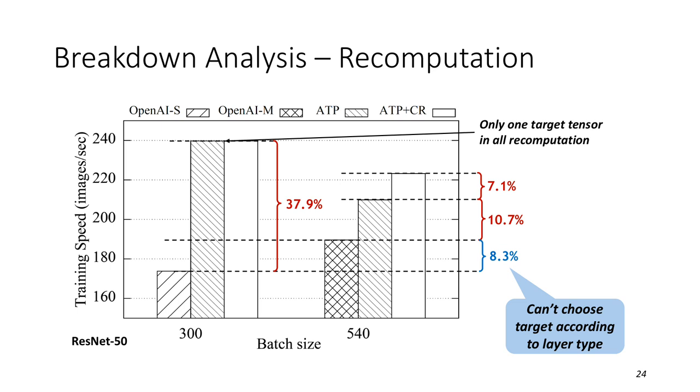This figure shows the breakdown analysis of recomputation. At the batch size of 300, the training speed remains the same when enabling ATP alone and enabling both ATP and CR. This is because there is only one target tensor in all recomputation. At the batch size of 540, Capuchin outperforms the memory mode of OpenAI by 17.8%. You need to note that the speed mode of OpenAI is even lower than memory mode, about 8.3%, which also demonstrates that it's not appropriate to choose memory optimization targets according to layer type.